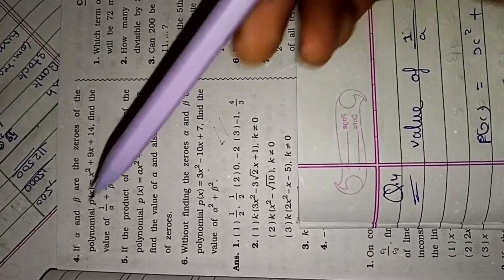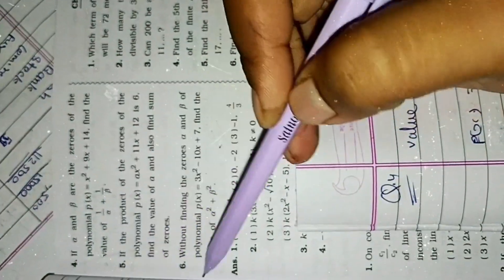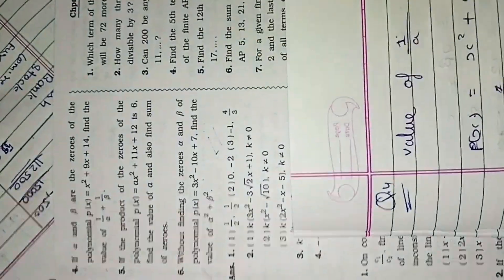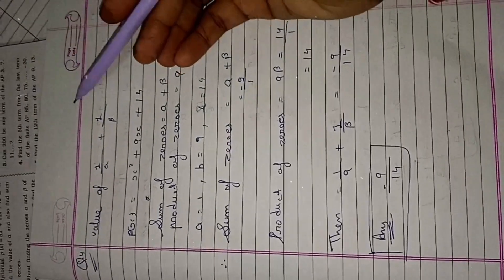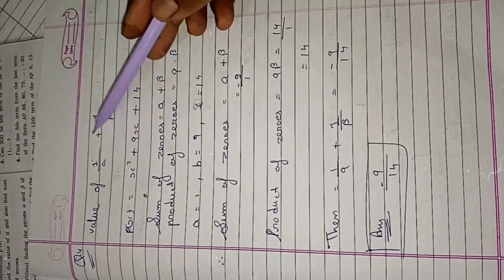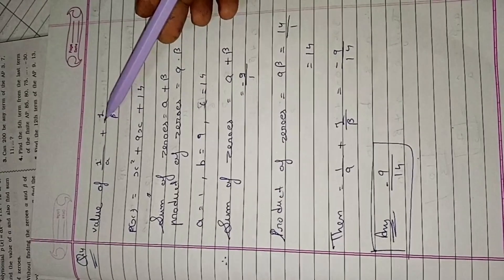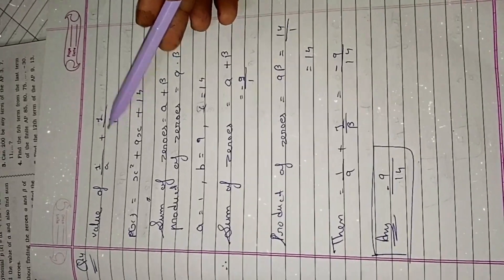Question number 4, 5, 6 — question number 4: find the value of 1 upon alpha plus 1 upon beta.